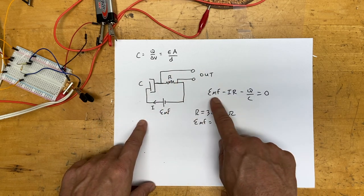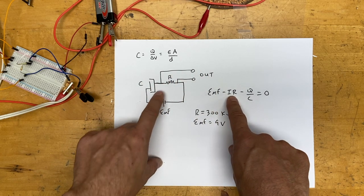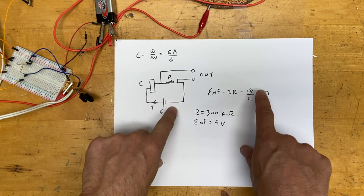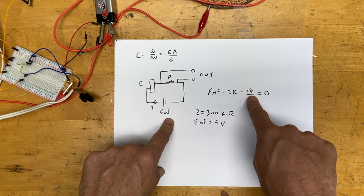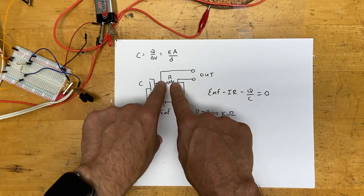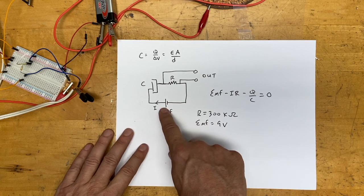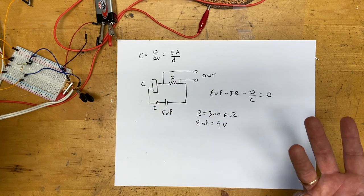If I look at the loop rule I have the battery, the voltage across the resistor, and then the voltage across the capacitor. But if I change c then this thing changes which changes the current. So we're going to measure the voltage across the resistor because it should change as I speak.